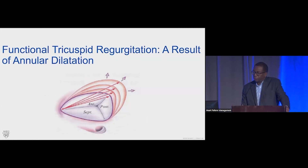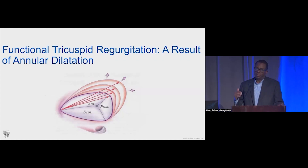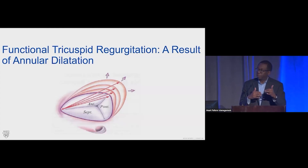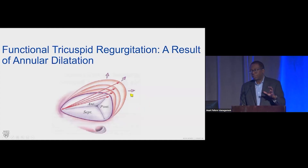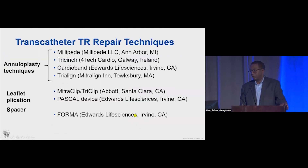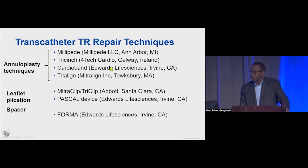Switching to the tricuspid valve: tricuspid valve regurgitation is most often functional, caused by annular dilatation leading to mal-coaptation of the leaflets. Patients with pacemakers are at higher risk of severe tricuspid regurgitation due to lead-leaflet interaction. Atrial fibrillation is one of the leading causes of functional tricuspid regurgitation. These patients don't do well — severe tricuspid regurgitation is associated with reduced survivorship — and they're also higher surgical risk with operative mortality around 10%, driving significant interest in percutaneous technologies.